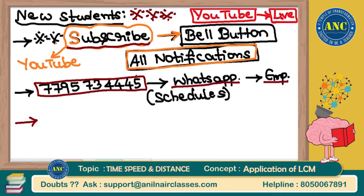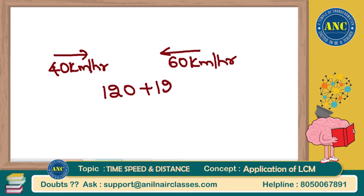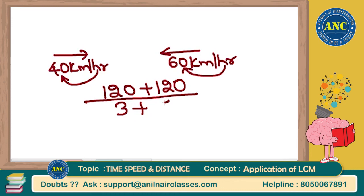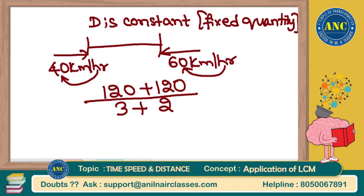How did we get 5 in the denominator? From P to Q it is 40 km/h and coming back is 60 km/h. Total distance is 120 + 120. Time from P to Q: 1 hour covers 40 km, so 120 km takes 3 hours. Time from Q to P: 1 hour covers 60 km, so 120 km takes 2 hours. Total time = 5 hours. Distance is constant — fix whatever value you like. I am fixing it as LCM of 40 and 60 = 120 kilometers. You can take any other number too.